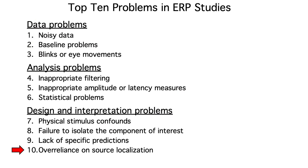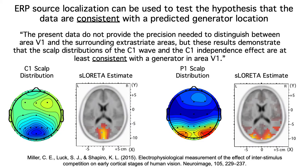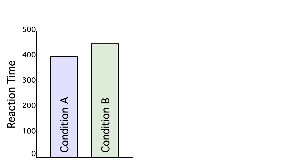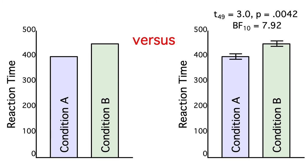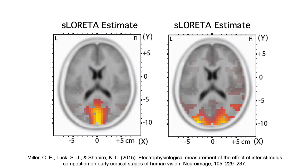The final problem I want to point to is over-reliance on ERP source localization. It's perfectly fine for a paper to include information about the plausible neural generator sources of their effects. They just need to be careful to say that the data are consistent with a particular generator source, rather than that the data demonstrate that a particular part of the brain is involved. If the researchers want to draw strong conclusions about the generator source, they would need to provide a principled quantification of the accuracy of the solution. After all, if you read a paper saying that mean reaction time was 50 ms greater in one condition than another, would you believe it if they provided nothing but the means? Wouldn't you need standard errors, confidence intervals, Bayes factors, p-values? You need an estimate of error with RT, so why shouldn't you require the same thing when someone tries to estimate the location of an ERP generator source?